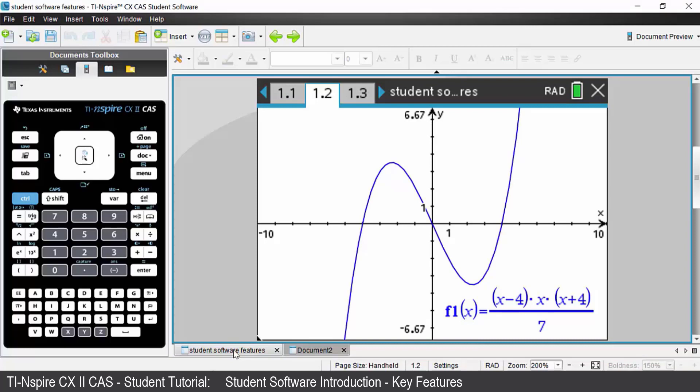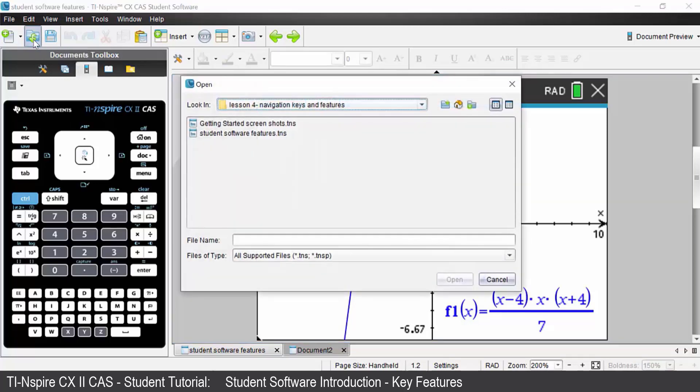Clicking back onto the first document, the next icon along will open documents that you already have saved. So if I've got documents saved on my computer I can navigate and find them and open them up.